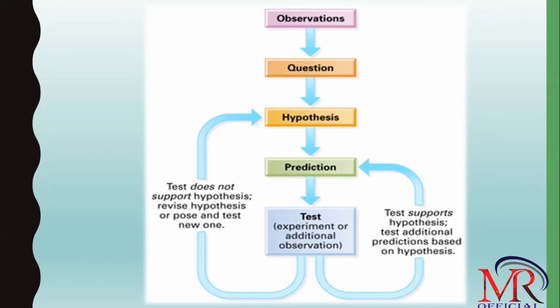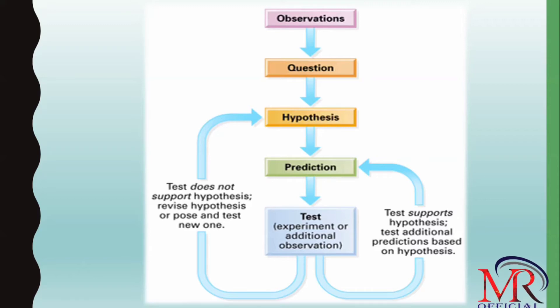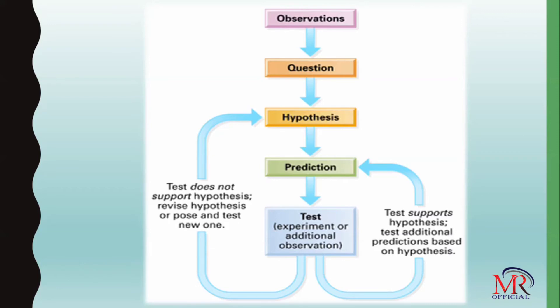In the biological method, what do we do? We do observation, we raise a question, we form a hypothesis, we make a prediction, and then we test it in the laboratory. Finally we get a result, and in this way we control the biological problem.